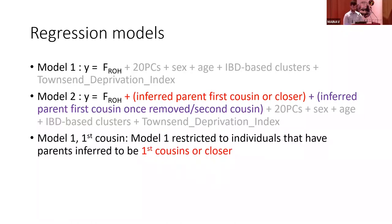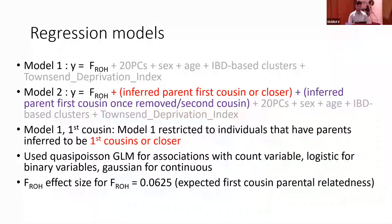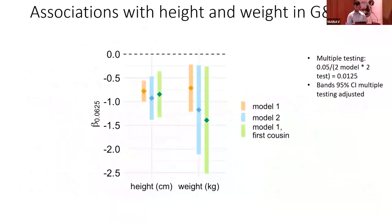We used quasi-Poisson GLMs for count variables, logistic for binary variables, and standard Gaussian models for continuous variables. Effect sizes for F-ROH are shown for F-ROH = 0.0625, which is the expected F-ROH for individuals with first cousin parents. In Genes and Health, we confirmed known associations between F-ROH and height and weight — we see significant associations in Model 1, Model 2, and Model 1 restricted to first cousins after multiple testing correction.